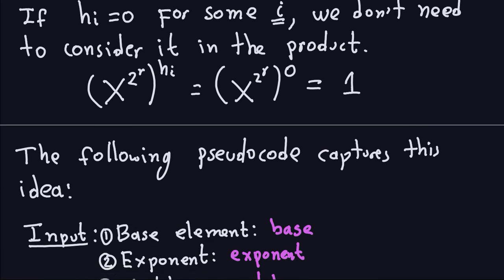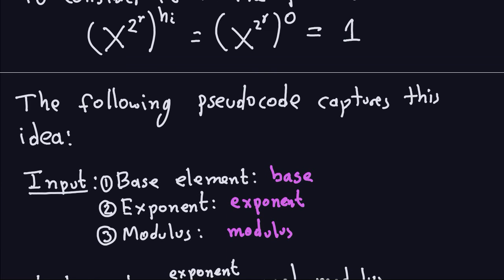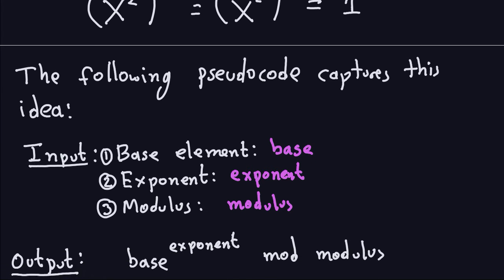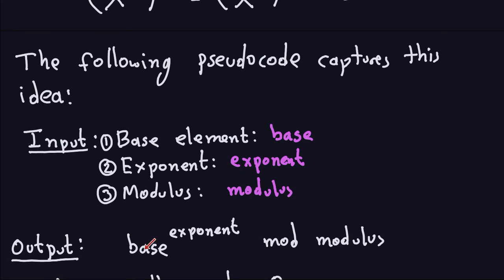The pseudocode is like this. As input we have a base element, an exponent, and the modulus. The output is the base raised to the exponent, modulo the modulus. I'm going to assume the modulus is always positive. One edge case: if the modulus is 1, division by 1 leaves no remainder, so it returns 0. I'll have a variable called 'answer' initialized to 1, which will hold the running product.